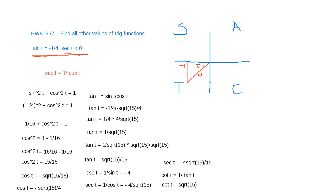So we have all six trigonometry functions: sine, cosine, tangent, cosecant, secant, and cotangent. Anyone has any questions? Jeremy, do you feel comfortable to try one? Follow the steps, draw the triangle. It's very difficult to get everything right the first time — let's try together.